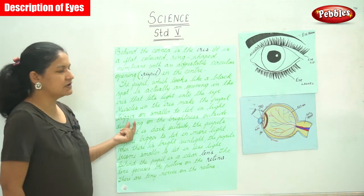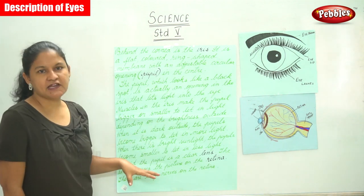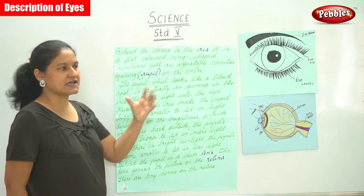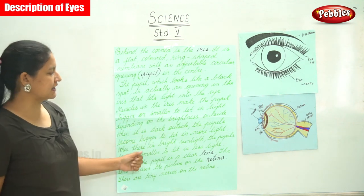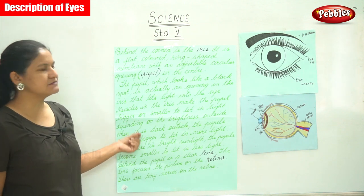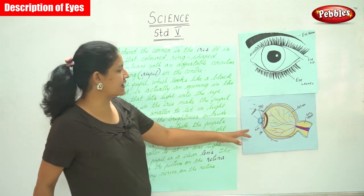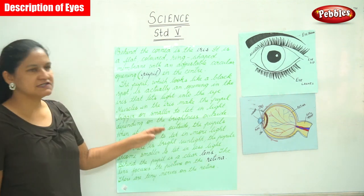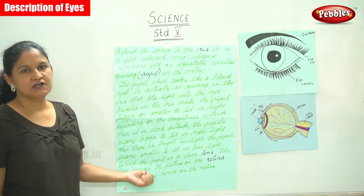When it is dark outside, the pupil becomes bigger to let in more light. When there is bright sunlight, the pupils become smaller to let in less light.